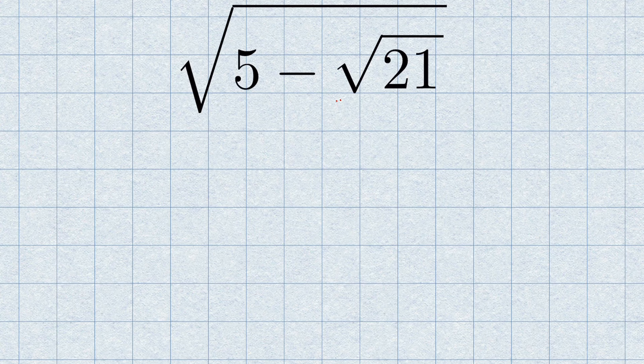We have 5 minus √21, then all under square root. How do we simplify this radical?